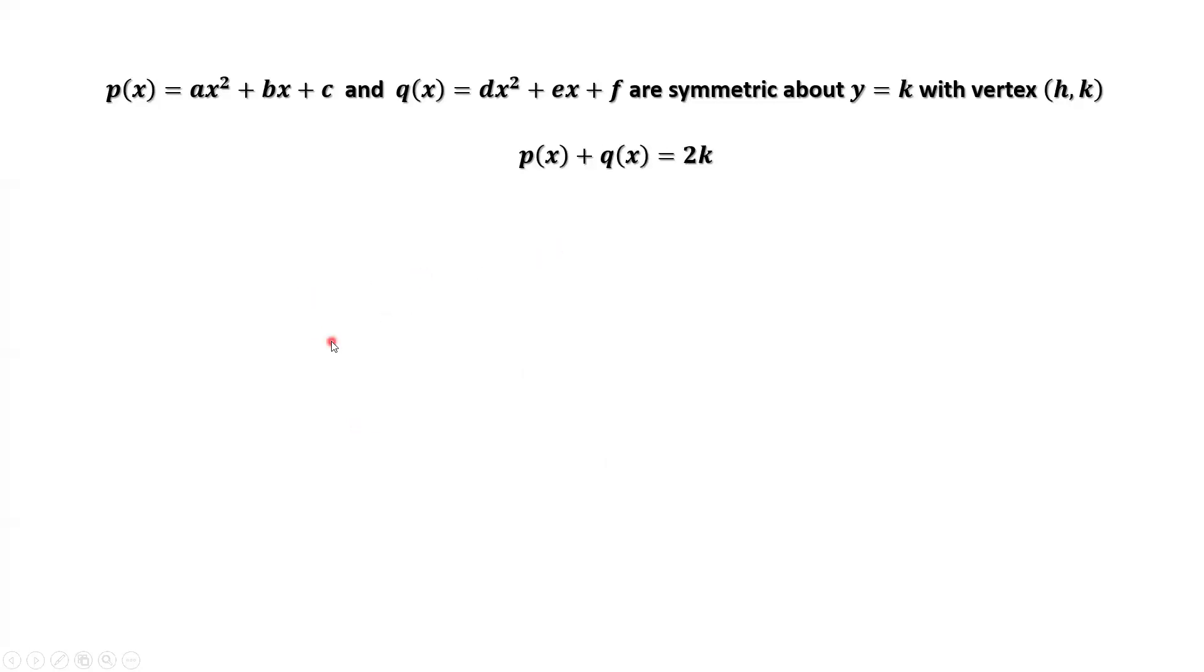What is our question? Our question is to find A plus B plus C plus D plus E plus F. If we replace x by 1 from the first parabola, we have P of 1 equals A plus B plus C. Similarly, if we replace x from the second parabola by 1, we have Q of 1 equals D plus E plus F.